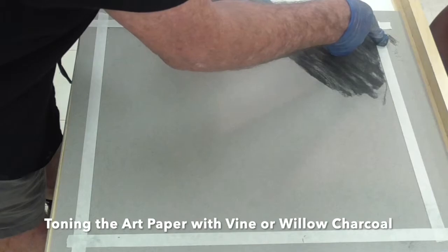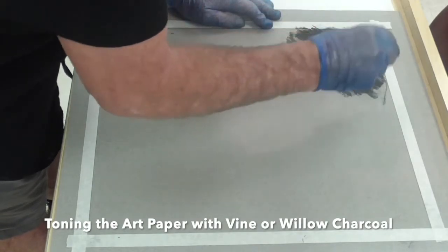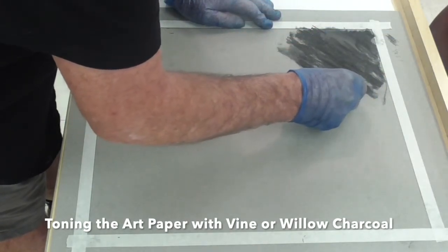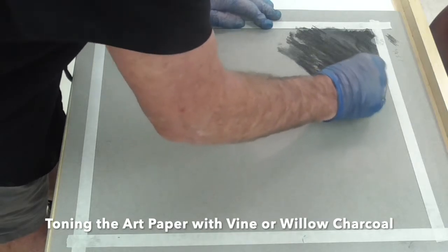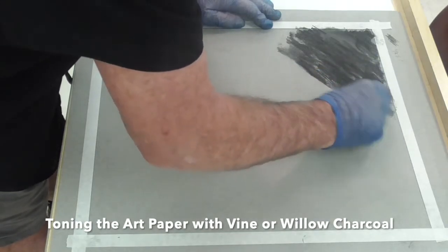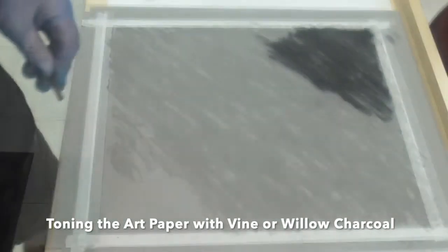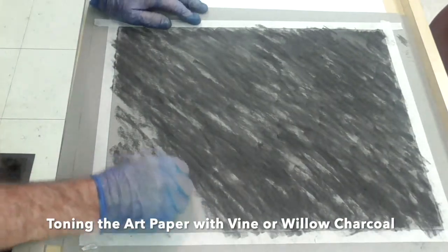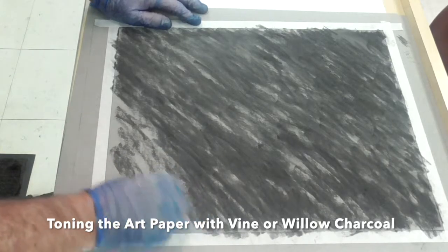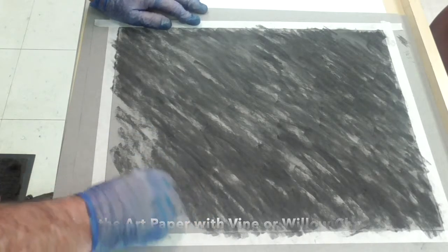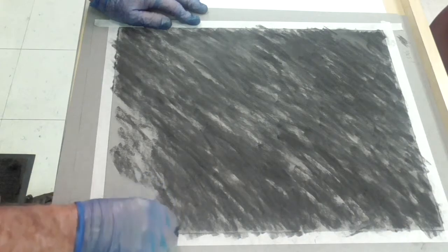The other side had the little bubbly round holes. I didn't want to fight that throughout the drawing, so I wanted more of a random texture. So just about done here with the initial layer of vine charcoal.